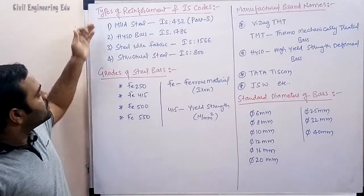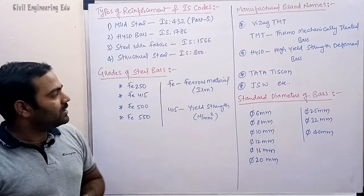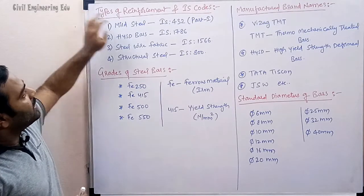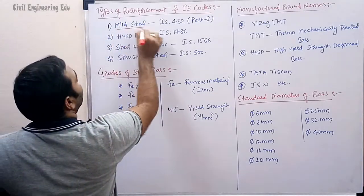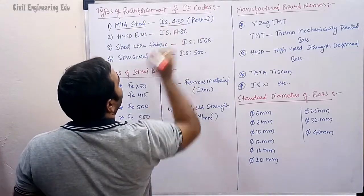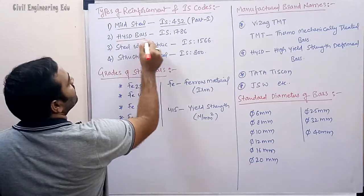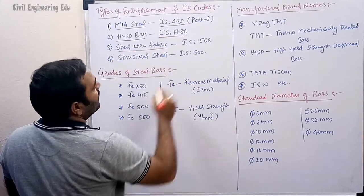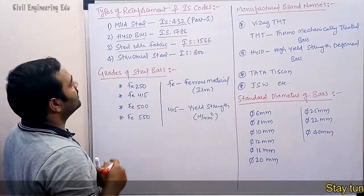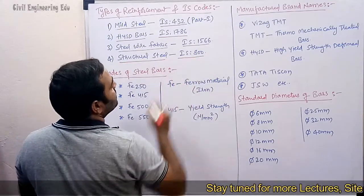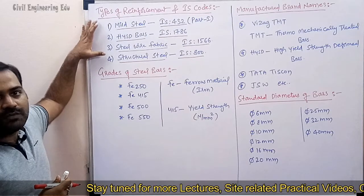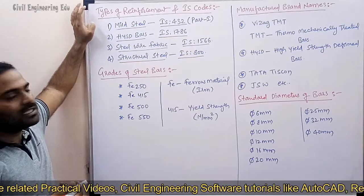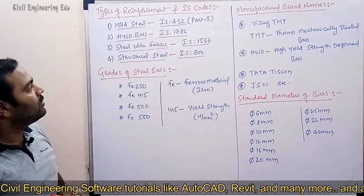Now let us see the types of reinforcement and their IS codes. First is mild steel bar with IS 432 Part 1. Second is HYSD bars with IS 1786. Third is steel wire fabric with IS 1566. For structural steel, IS 800 is used. These are the types of reinforcements used for RC structures and steel structures.